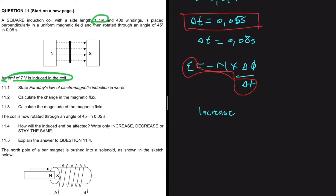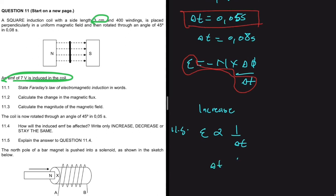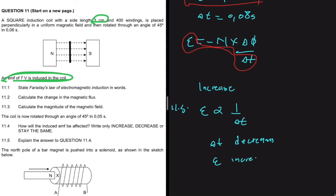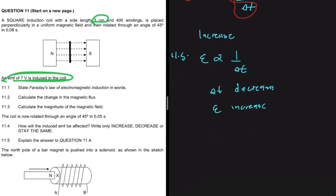For 11.5, explaining the answer to 11.4: the EMF is inversely proportional to the time taken. If the time increases, the EMF decreases; but in our case the time is decreasing (Δt decreases), so the induced EMF increases.